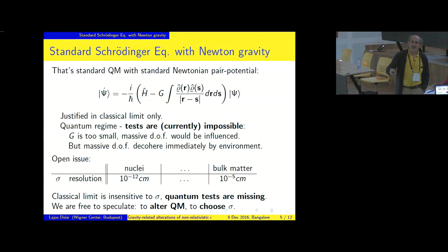The only justification of this equation is that it has the suitable classical limit. And so it yields Newtonian gravity for you or for the plumbum block. In the quantum regime, tests are currently impossible because the gravitational interaction is too small, and only massive degrees of freedom could be influenced.